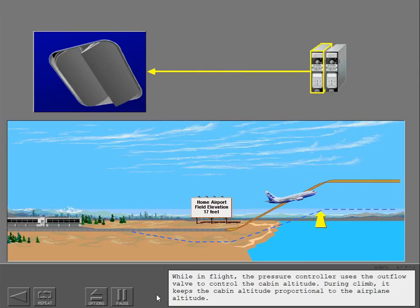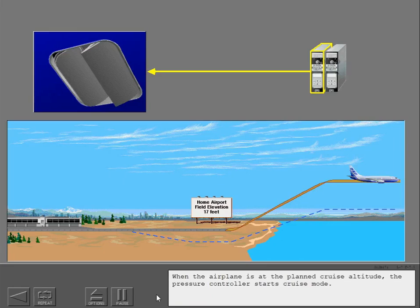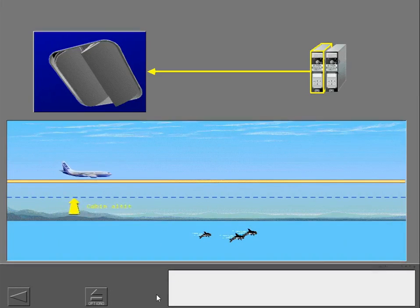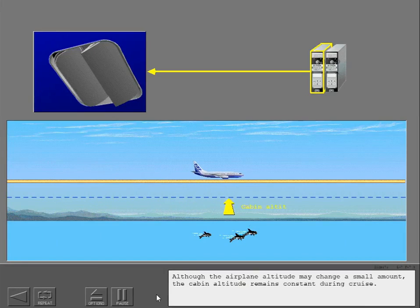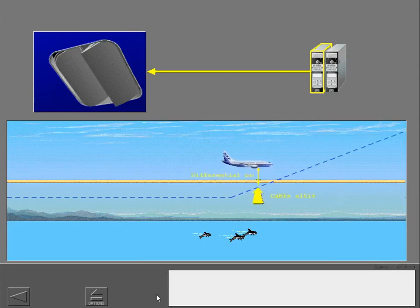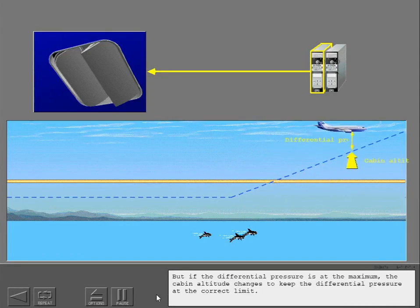While in flight, the pressure controller uses the outflow valve to control the cabin altitude. During climb, it keeps the cabin altitude proportional to the airplane altitude. When the airplane is at the planned cruise altitude, the pressure controller starts cruise mode. Although the airplane altitude may change a small amount, the cabin altitude remains constant during cruise. But if the differential pressure is at the maximum, the cabin altitude changes to keep the differential pressure at the correct limit.